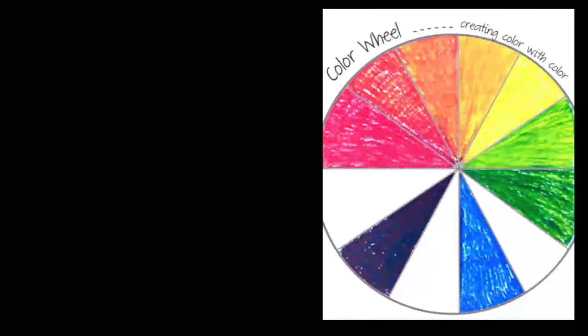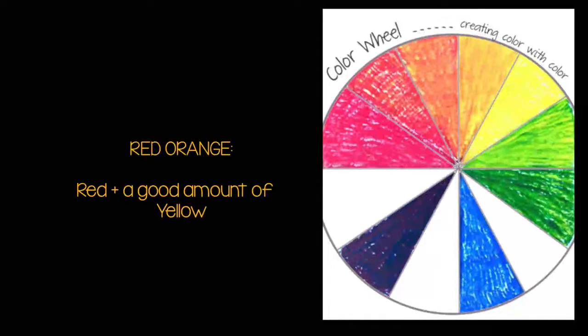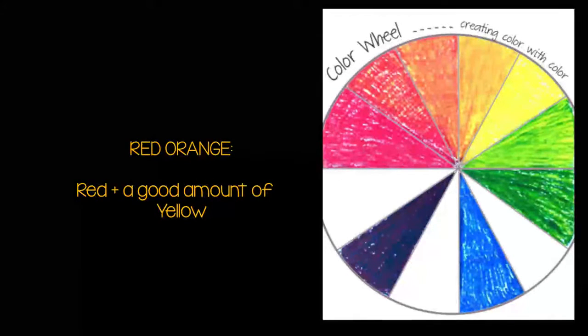Now for red-orange. To begin, lay down red, more than you did for the orange. Go back over it with a good amount of yellow using firm pressure. If it looks too much like orange, simply go back and add a little red to it. Continue the process until you get the color you're wanting to achieve.